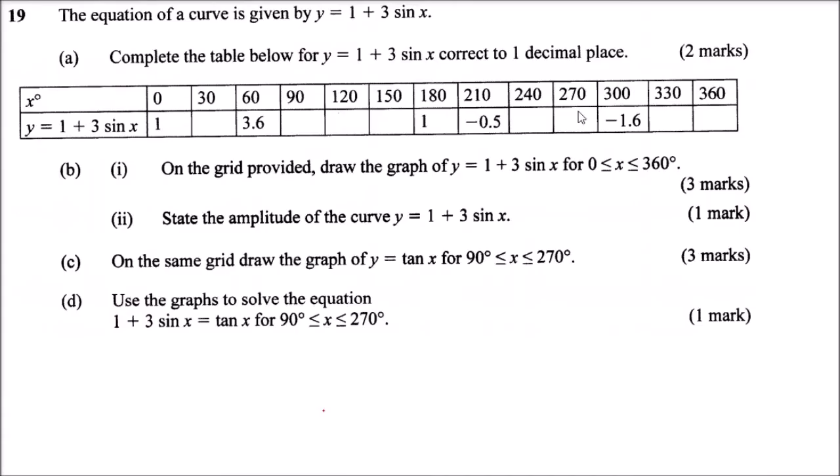Question number 19. We are told the equation of a curve is given by y equals 1 plus 3 sin x. Part A: complete the table below for y equals 1 plus 3 sin x, correct to one decimal place, for two marks. You have been given a row of angle x values and the function y equals 1 plus 3 sin x.